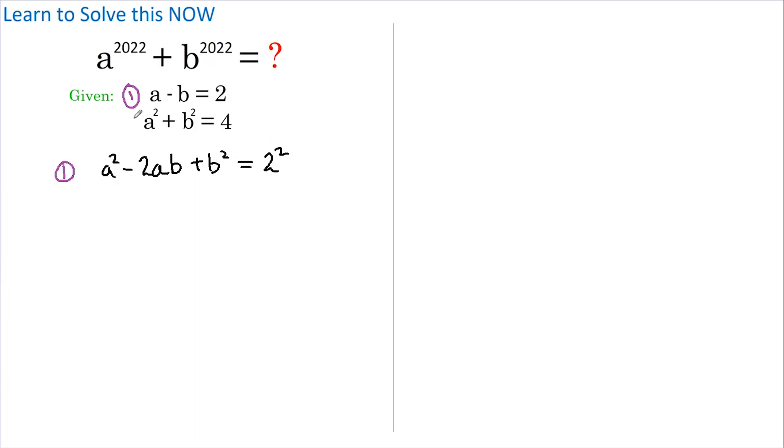Now let's take equation 2 and write it down underneath. So we have a squared plus b squared equals 4, and if we now deduct the bottom from the top...